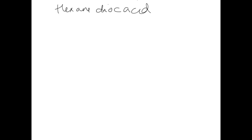So, hexane dioic acid. The hexane bit — treat it like a normal alkane — tells us that there are six carbons in a line. This bit here tells us that we're talking about a carboxylic acid, which has a group of COOH. The fact that there's 'di' means that there are two of those.